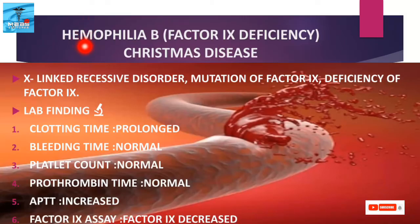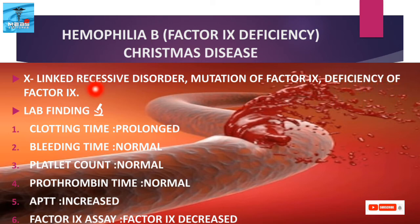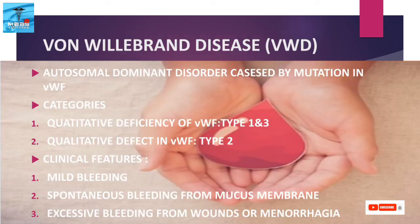Haemophilia B, also known as Christmas disease, is due to factor 9 deficiency. It is an X-linked recessive disorder caused by mutation of the factor 9 gene, leading to deficiency of factor 9. In lab diagnosis, clotting time is prolonged and the activated partial thromboplastin time is increased, while bleeding time and platelet count are normal. Prothrombin time is also normal, similar to Haemophilia A, and factor 9 assay detects the decrease in factor 9.